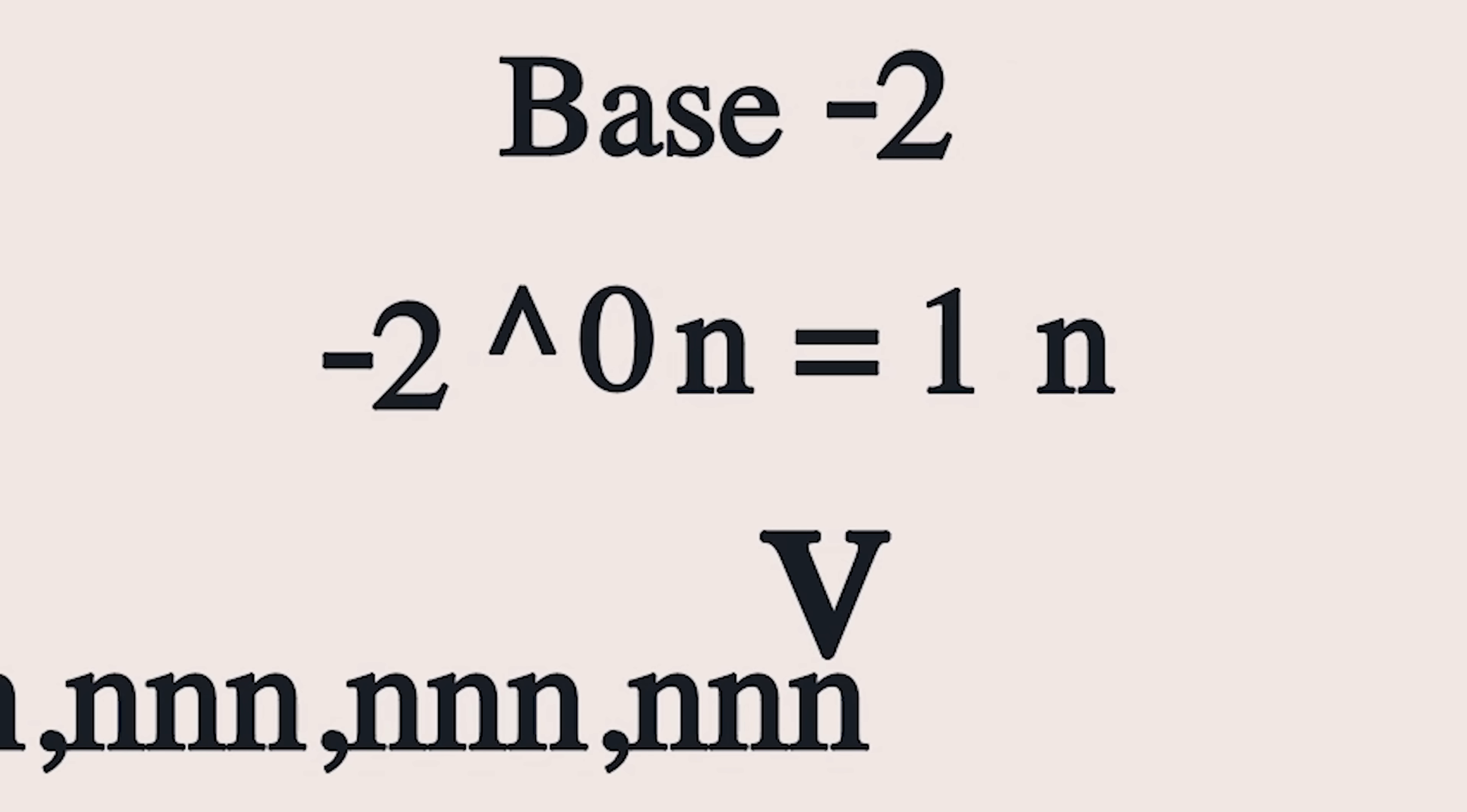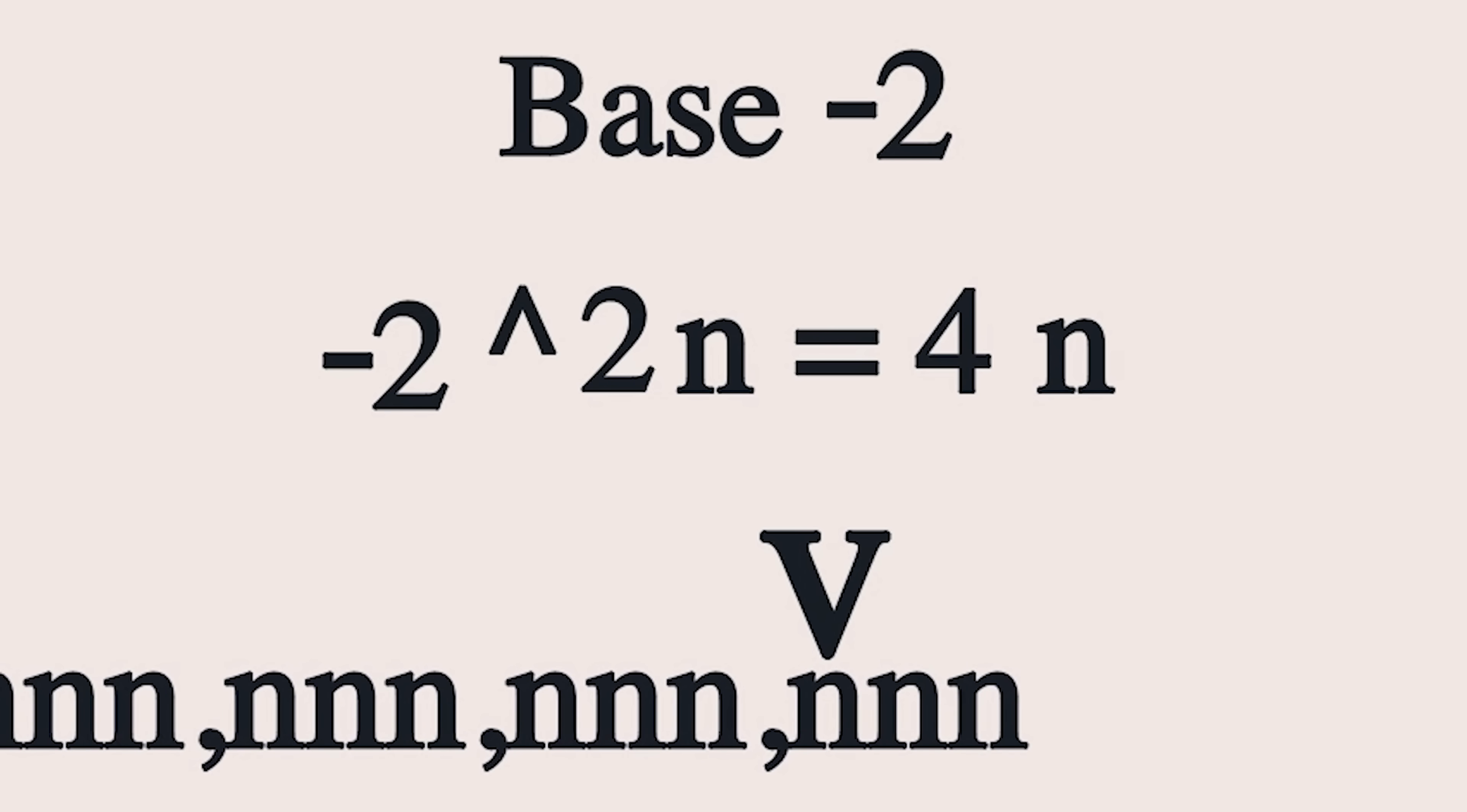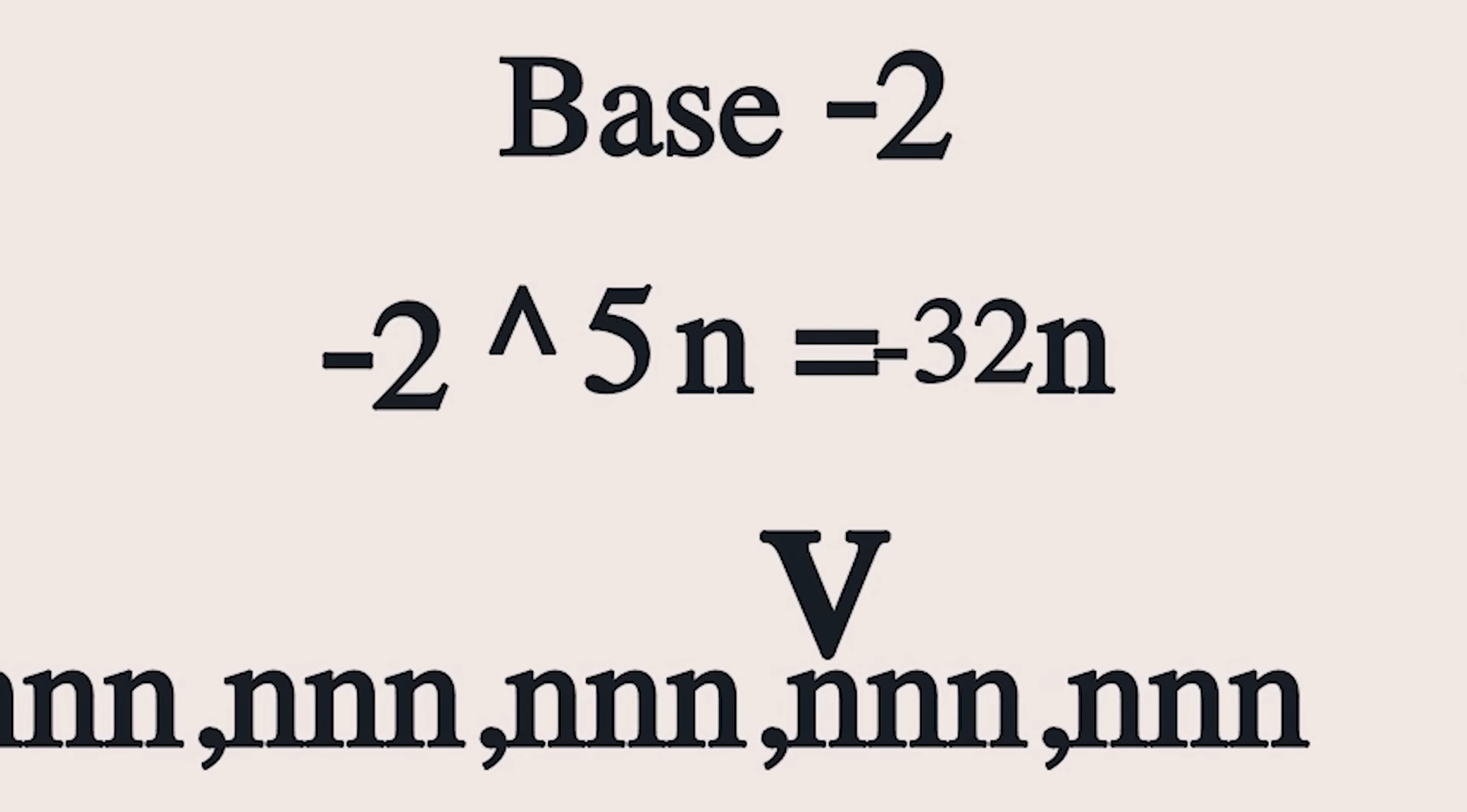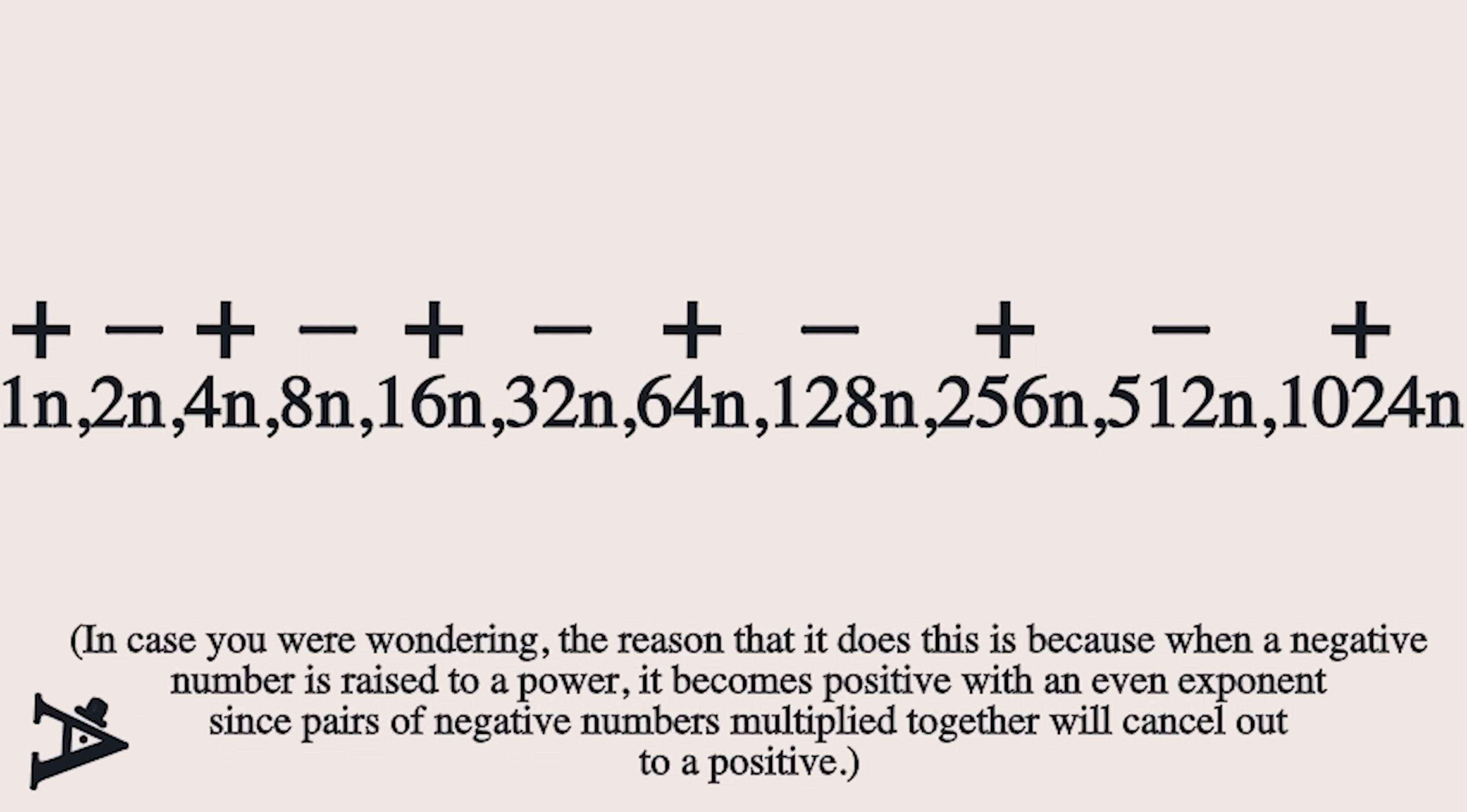What about negative bases? Surely that can't work. Well, actually, it totally does again, and it's quite strange. With base negative 2, for example, the first digit is negative 2 to the power of 0, which is 1. Then negative 2 to the power of 1, which is, of course, negative 2. Then negative 2 to the power of 2, which is positive 4. Then negative 8, positive 16, negative 32, positive 64, and so on. It's the same as base 2, but with every second number flipped. Very strange. Not all negative, like we might expect.